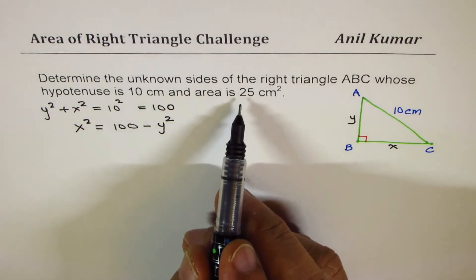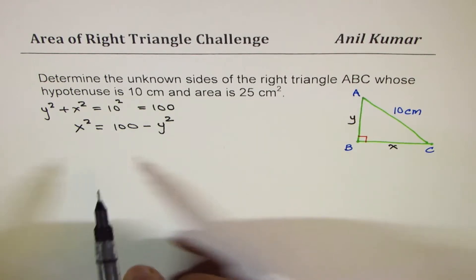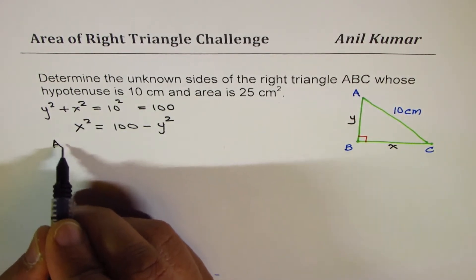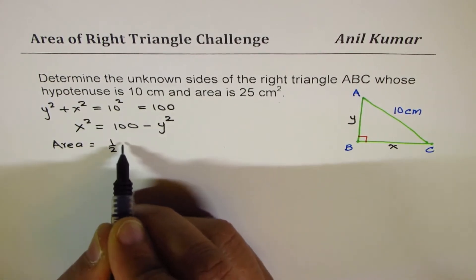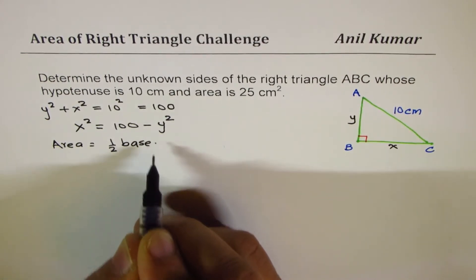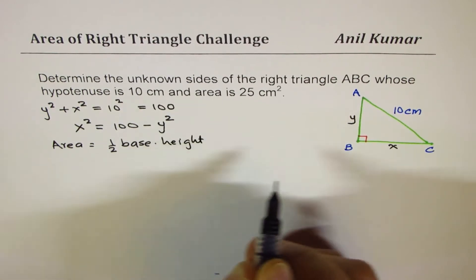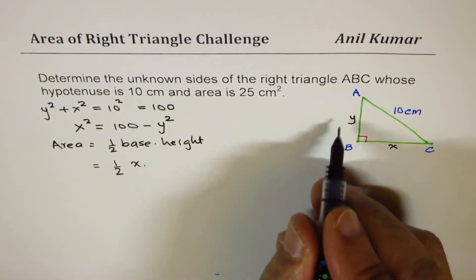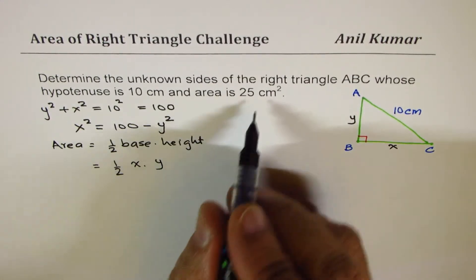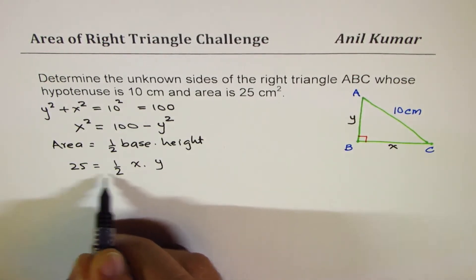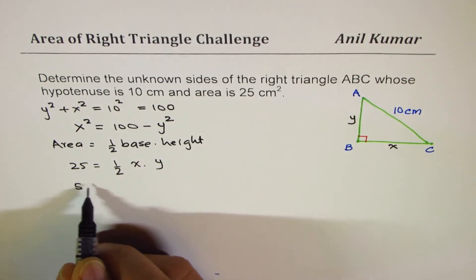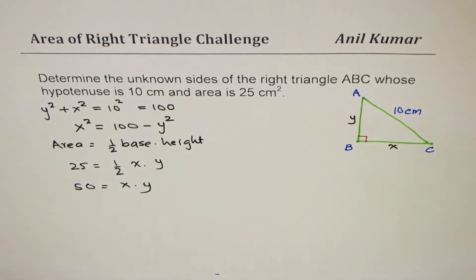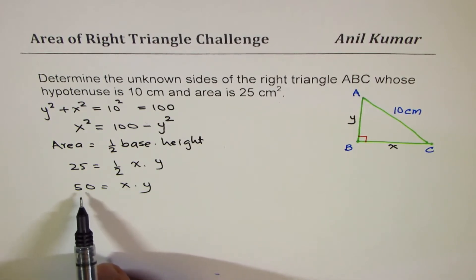We are given the area as 25 centimeters squared and as you know, area is half of base times height. In the given scenario, base is X for us and height is Y. Area is 25, right? So we could cross multiply and say 50 is X times Y. So we know that X and Y are also related as 50 equals to X times Y.